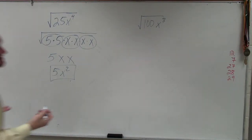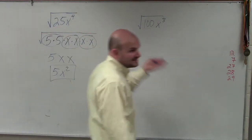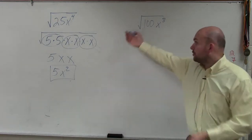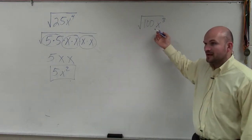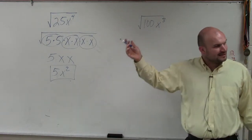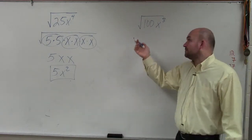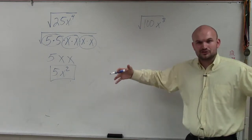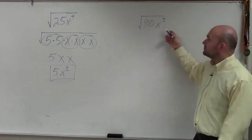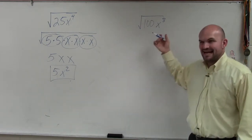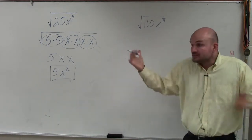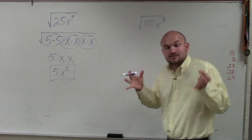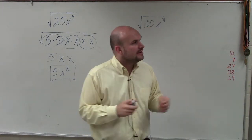Obviously, you could do the exact same thing that I did on the last problem for this problem. However, I think you guys would agree, if you want to do the prime factorization of 100, it's like a bigger factor tree. And then writing out x to the eighth is a lot. You can still do it, and if that's the way you understand and that's the way you want to do it, that's perfectly fine.